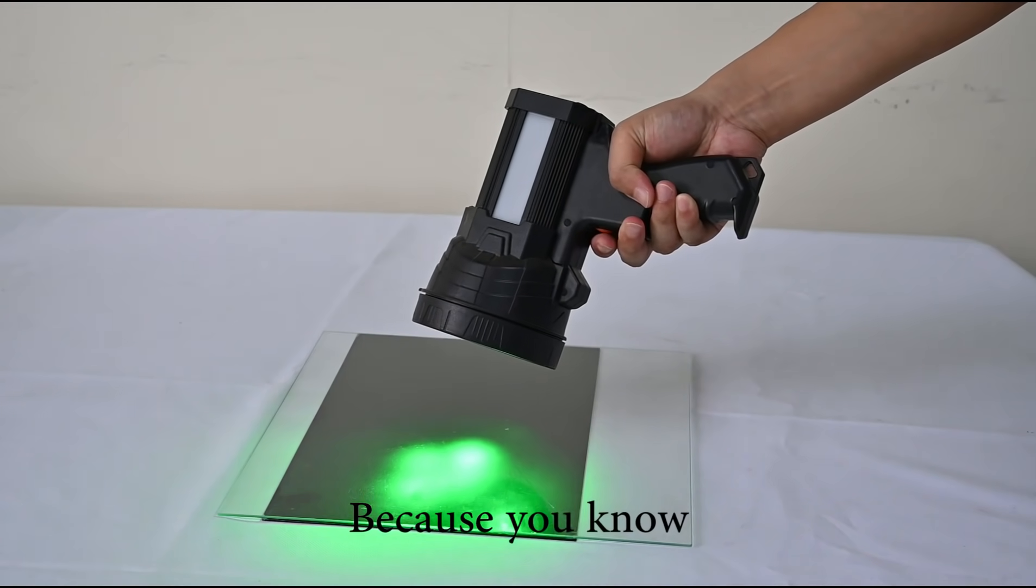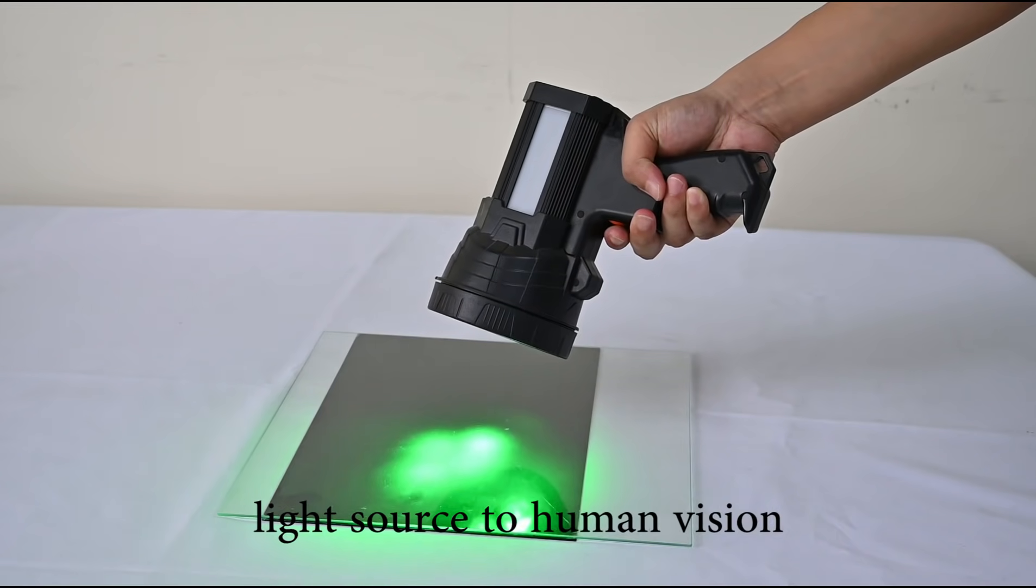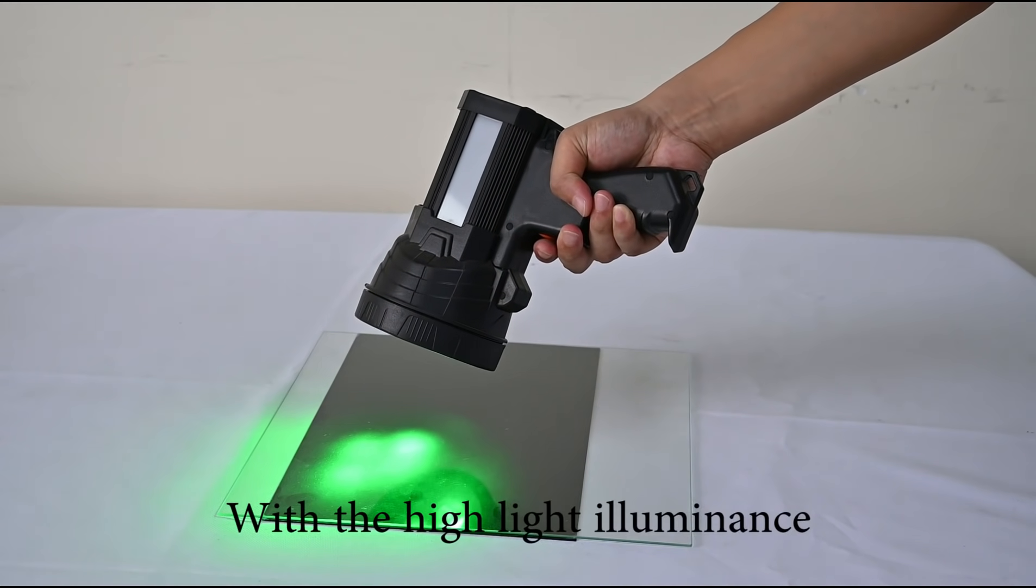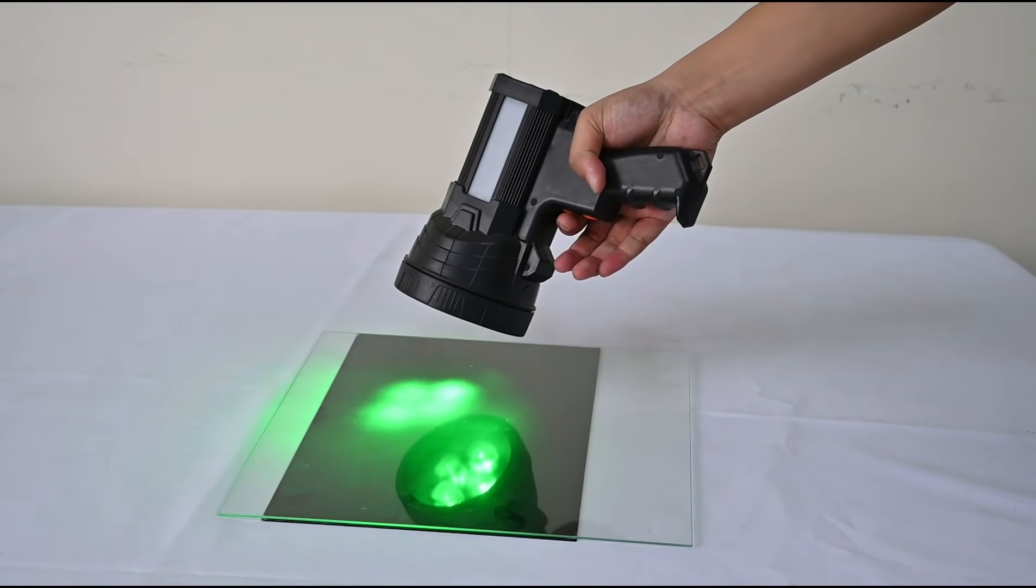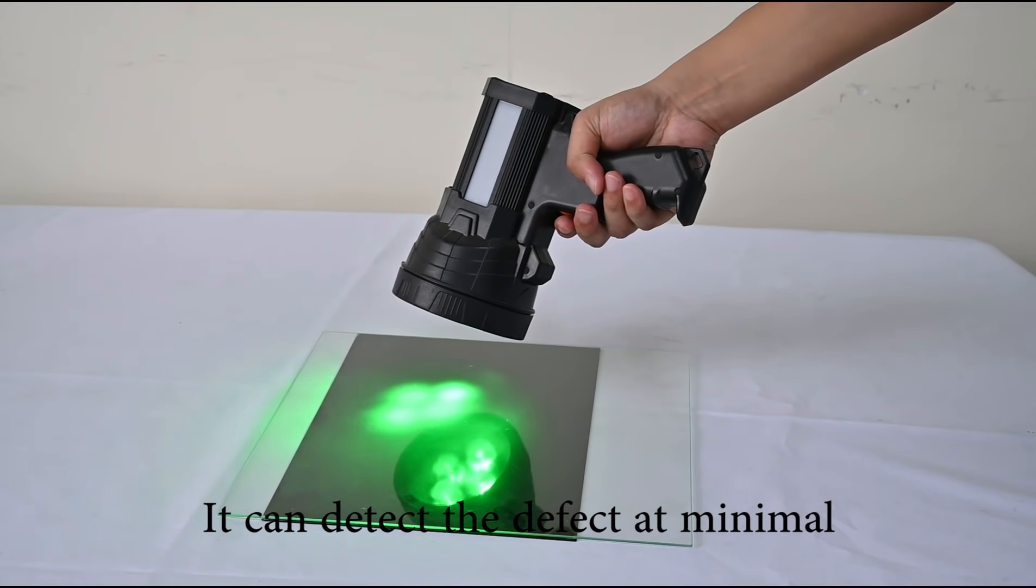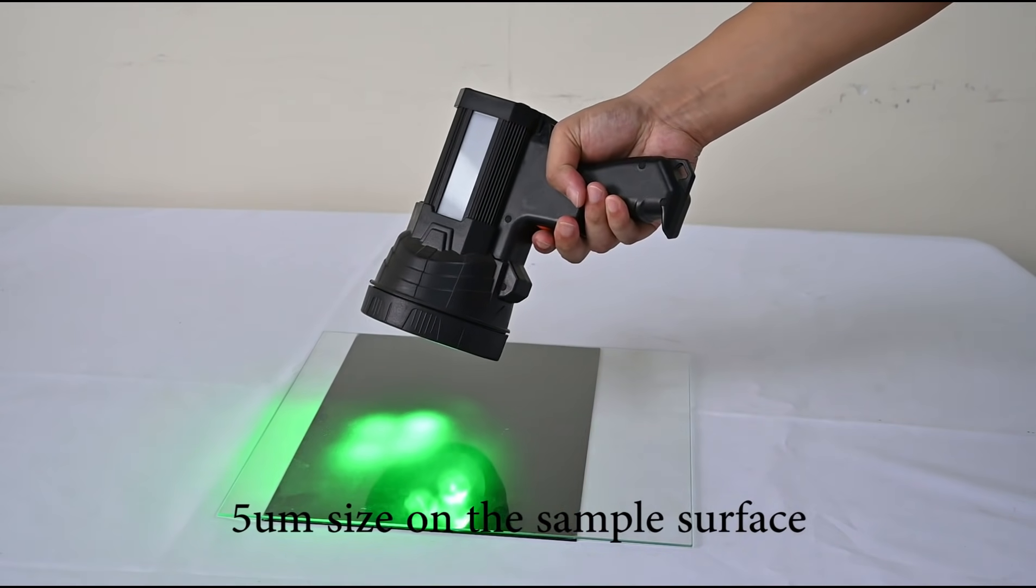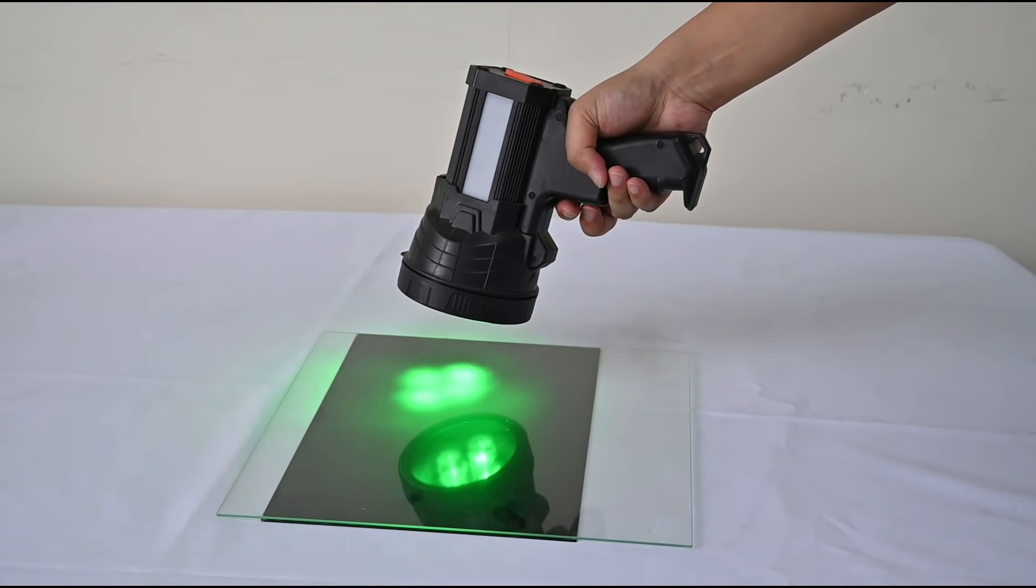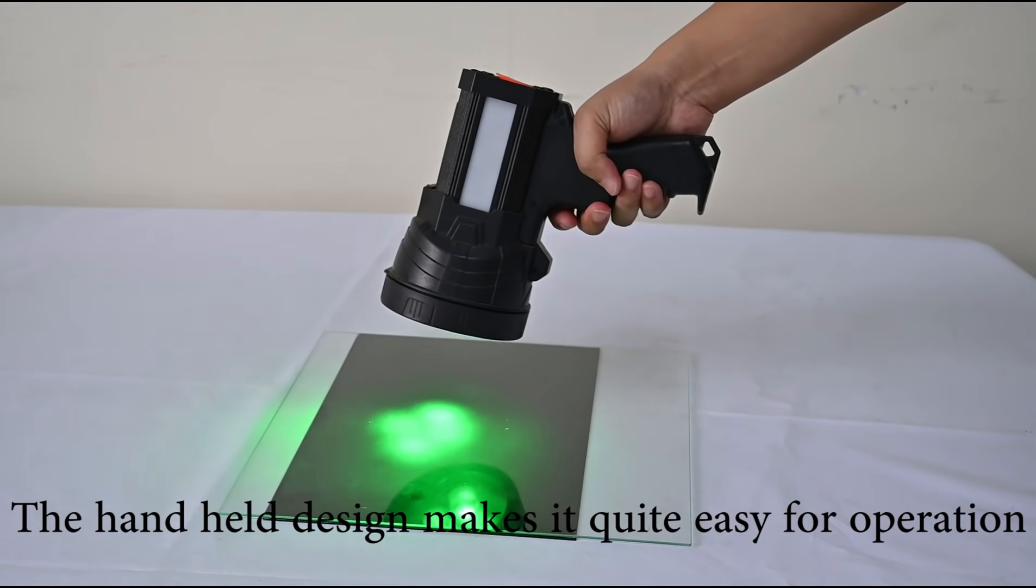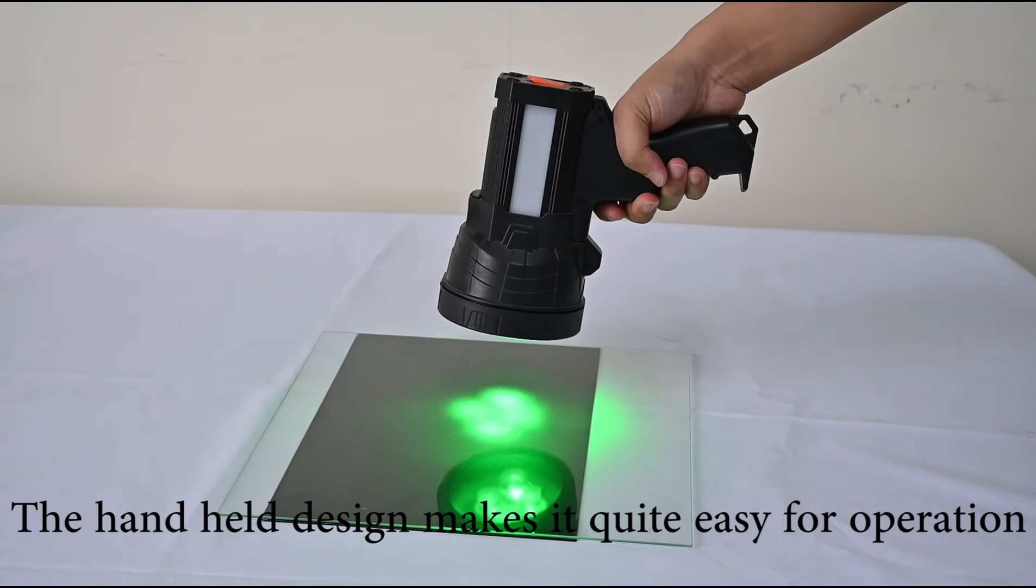The green light is the most sensitive light source to human vision. And with the high light luminance, it can detect the defect at minimum 5mm on the sample surface. And the handheld design makes it quite easy for operation.